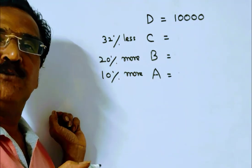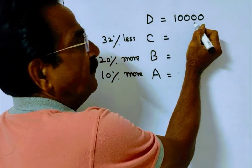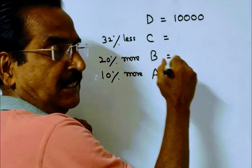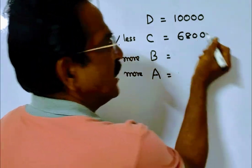C obtained 32 percent less than D. 32 percent of 10,000 is 3,200. 3,200 less means C obtained 6,800.